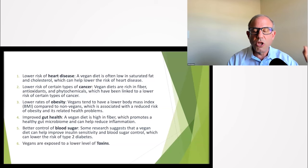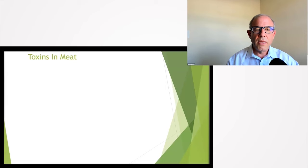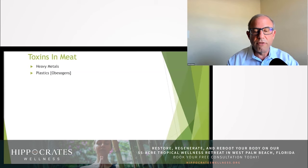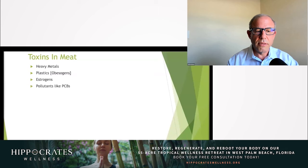Number six is that vegans are exposed to lower levels of toxins. I can give a whole lecture just on this, I could talk for hours just on the issue of toxins. When I say toxins, what am I talking about? Let me give you an example - some of the toxins that you find in meat: heavy metals, plastics. We all use plastics in our modern society. Many of these plastics are loaded with chemicals that can cause obesity, chemicals like BPA. Another toxin in meat: estrogens.